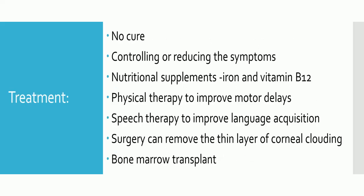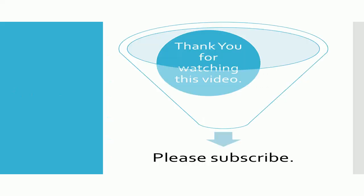Treatment: A cure does not exist for I-cell disease. Treatment is limited to controlling or reducing the symptoms associated with this disorder. Nutritional supplements, particularly iron and vitamin B12, are often recommended. Physical therapy to improve motor delays and speech therapy to improve language acquisition are treatment options. Surgery can remove the thin layer of corneal clouding to temporarily improve the complication. It is possible that bone marrow transplant may be helpful in delaying or correcting the neurological deterioration that occurs with I-cell disease.